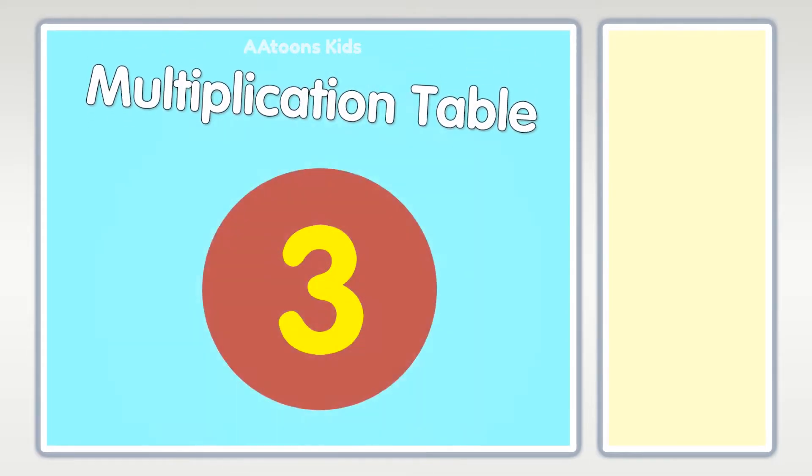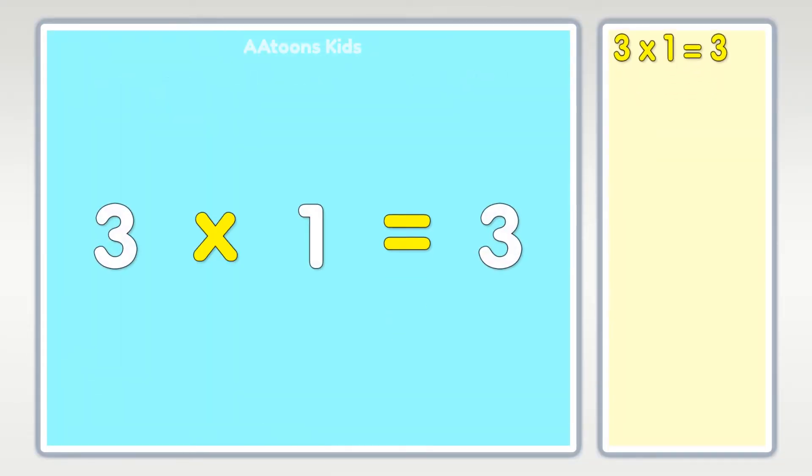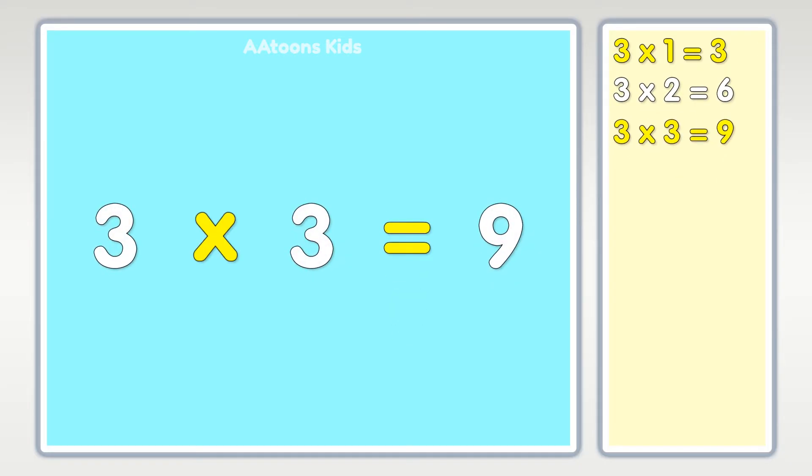Table of three: three times one is three, three times two is six, three times three is nine, three times four is twelve.